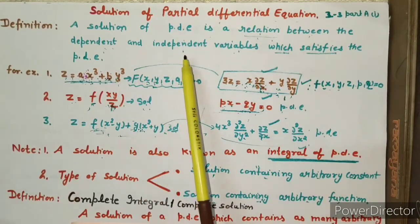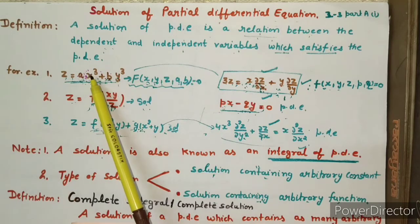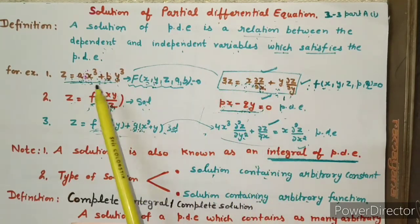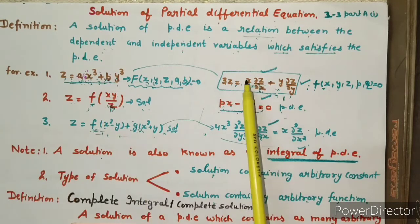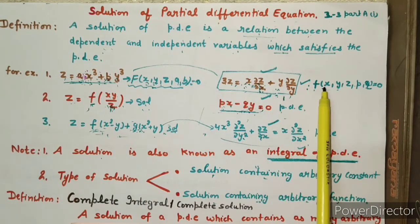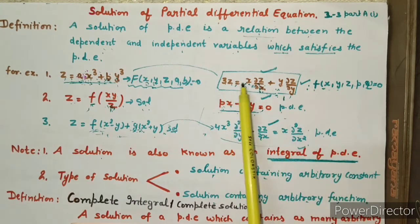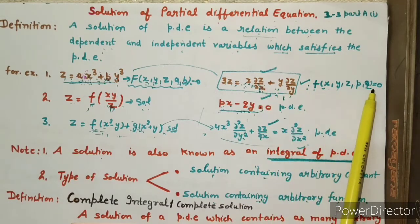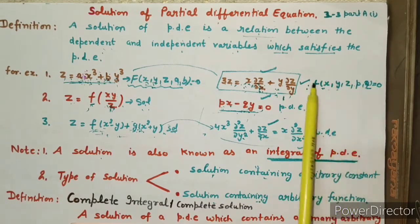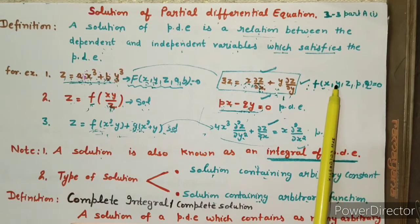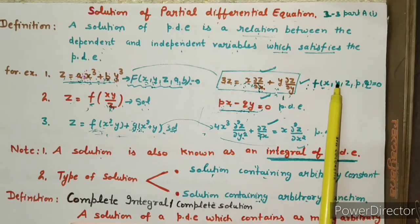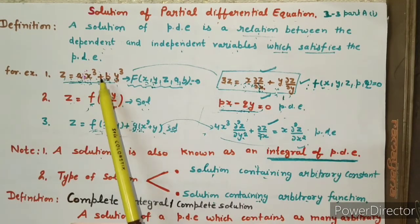The solution was a relation between dependent and independent variables that satisfies the differential equation. This is your differential equation. This is the solution. In this notation, f is a function of x, y, z, p and q, equal to 0. This is the equation — this is my given partial differential equation, and this is the corresponding solution equation.